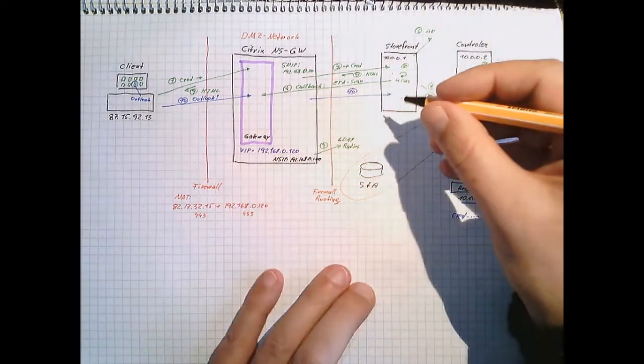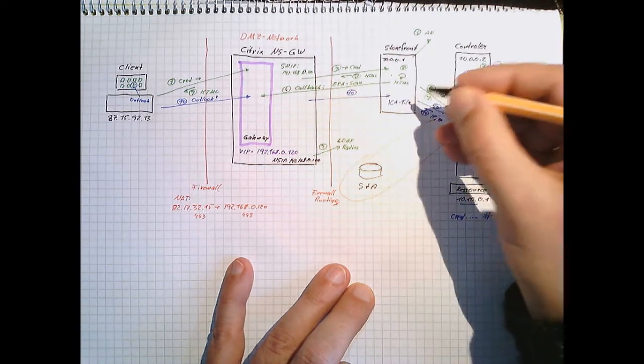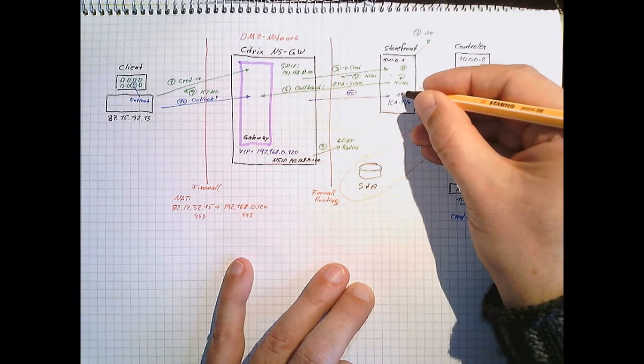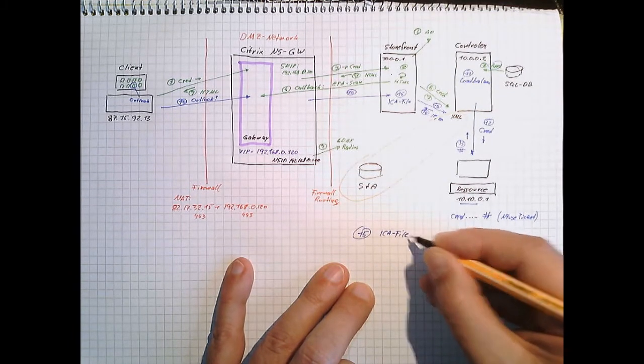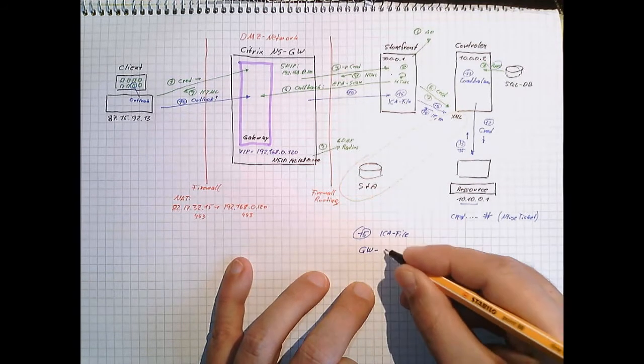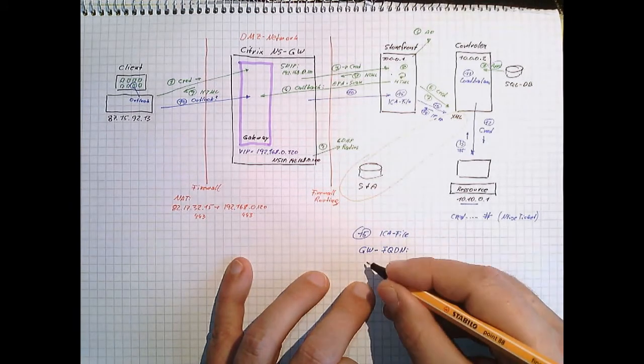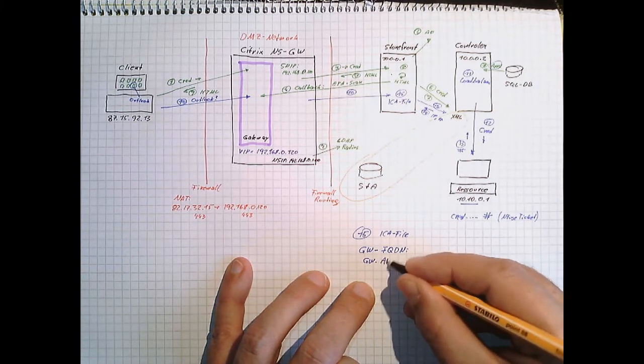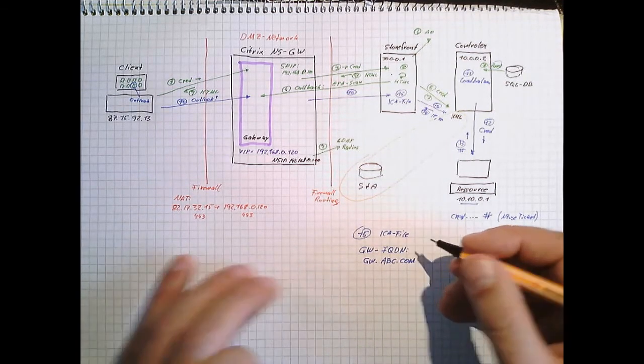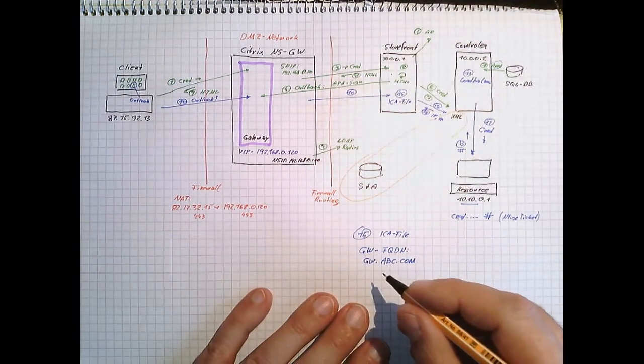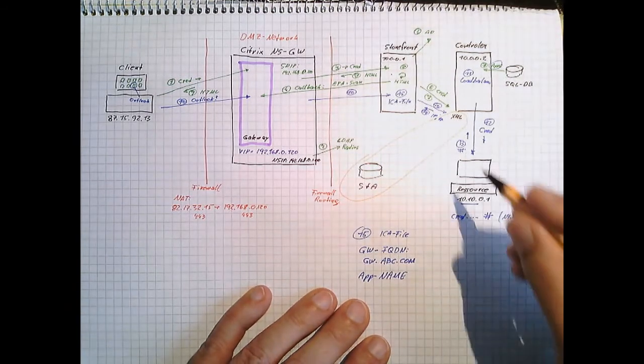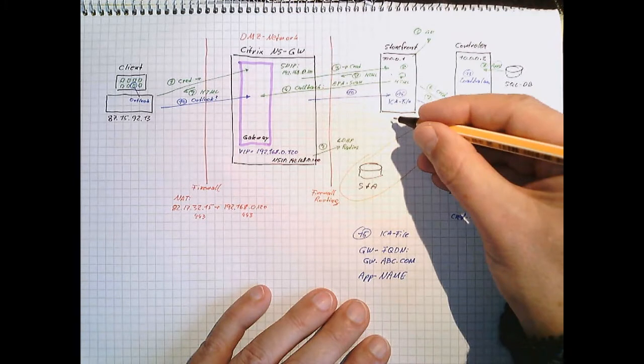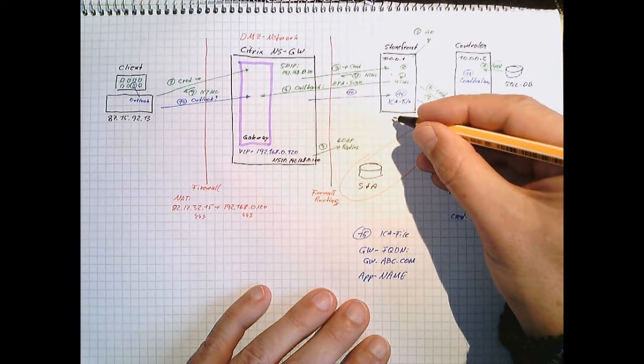And Storefront now has to create the ICA file. This is number 15. Now this is what's inside the ICA file. There has to be the FQDN, the fully qualified domain name of the gateway. So this will be gateway.abc.com for example. Next, there will also be the name of the application in it and some more, like screen resolution and so on. So now we run into a problem. We must not send the IP address to the user because this would expose internal secrets to the outside. Therefore, we have to store it inside of our environment.